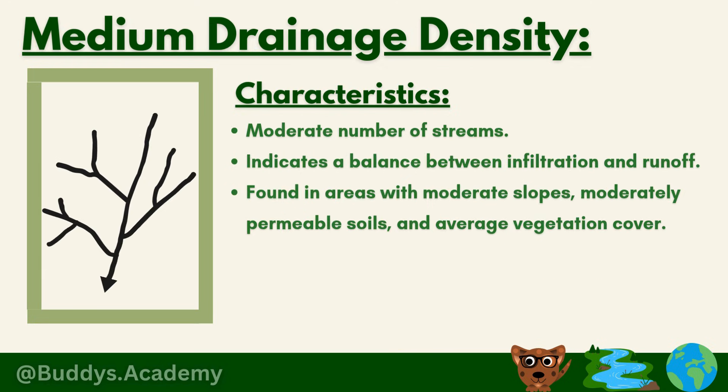So now let's take a look at your medium drainage density. The first characteristic is that there's going to be a moderate number of streams, indicating a balance between infiltration and runoff. That means some water is going to soak in and some water is just going to flow on the surface — there's not going to be too much of either.